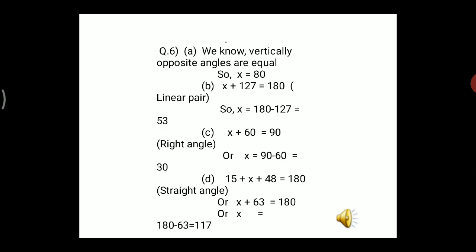Part b: x and 127° form a linear pair of angles — they are adjacent angles and their sum is 180°. Therefore x + 127° = 180°, so x = 180° − 127° = 53°.